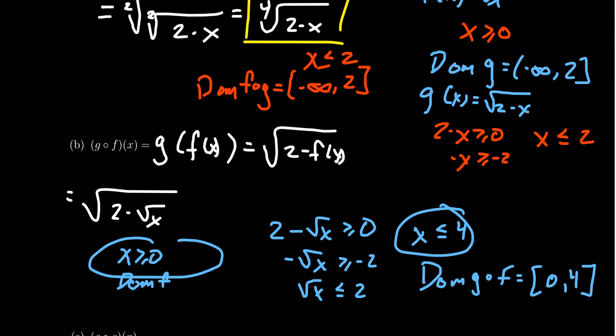Where do these bounds come from? The zero came about because x has to be greater than or equal to zero to fit inside of f. The four came from the fact that in order for g of x to be defined, the input can't be bigger than two. So we calculate what values can go into f to guarantee the output is not bigger than two. The biggest x can be is four, because the square root of four is two, which was the threshold that g allowed.